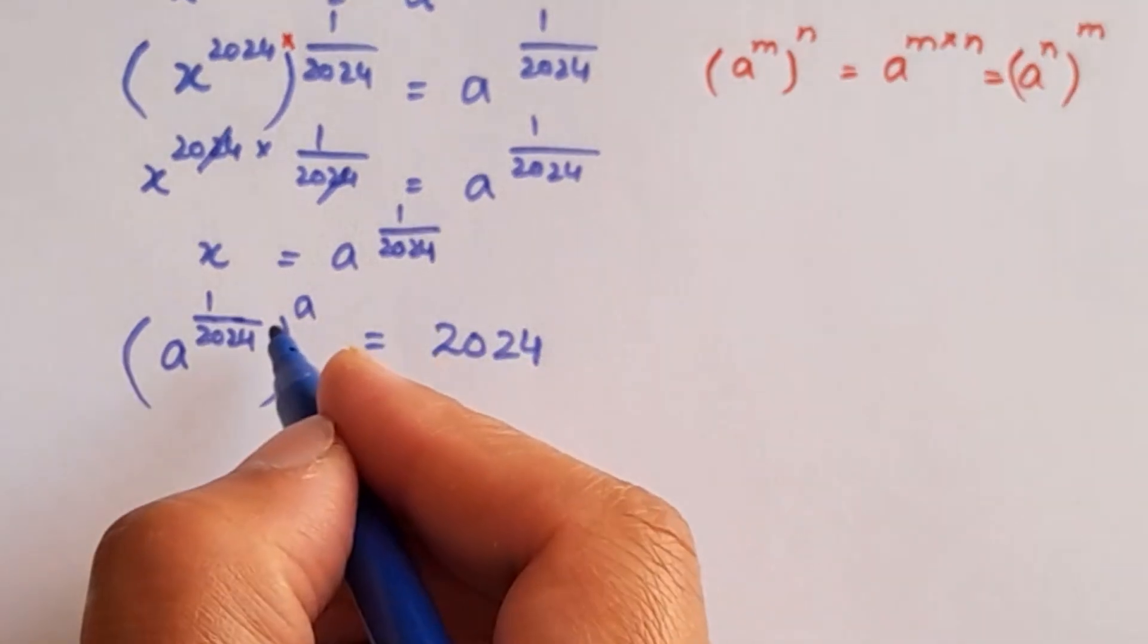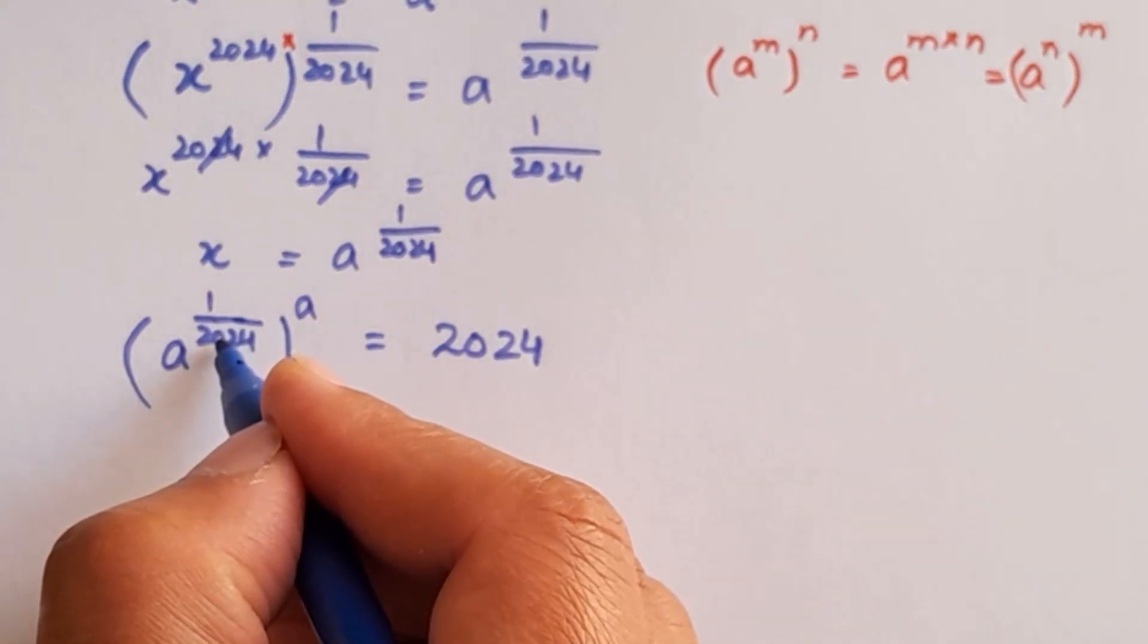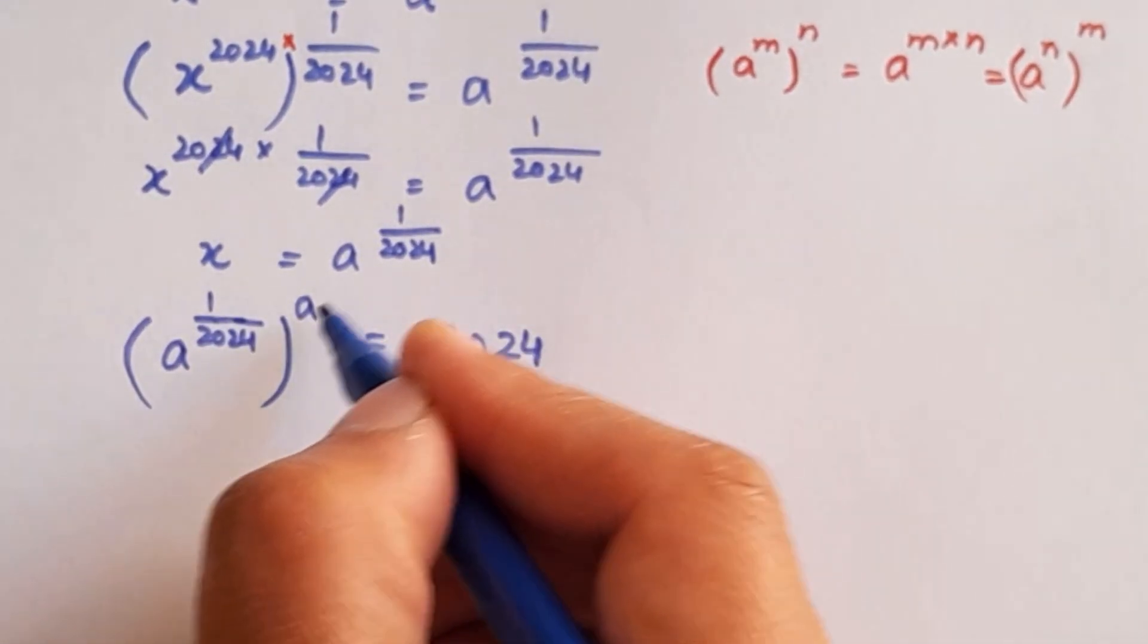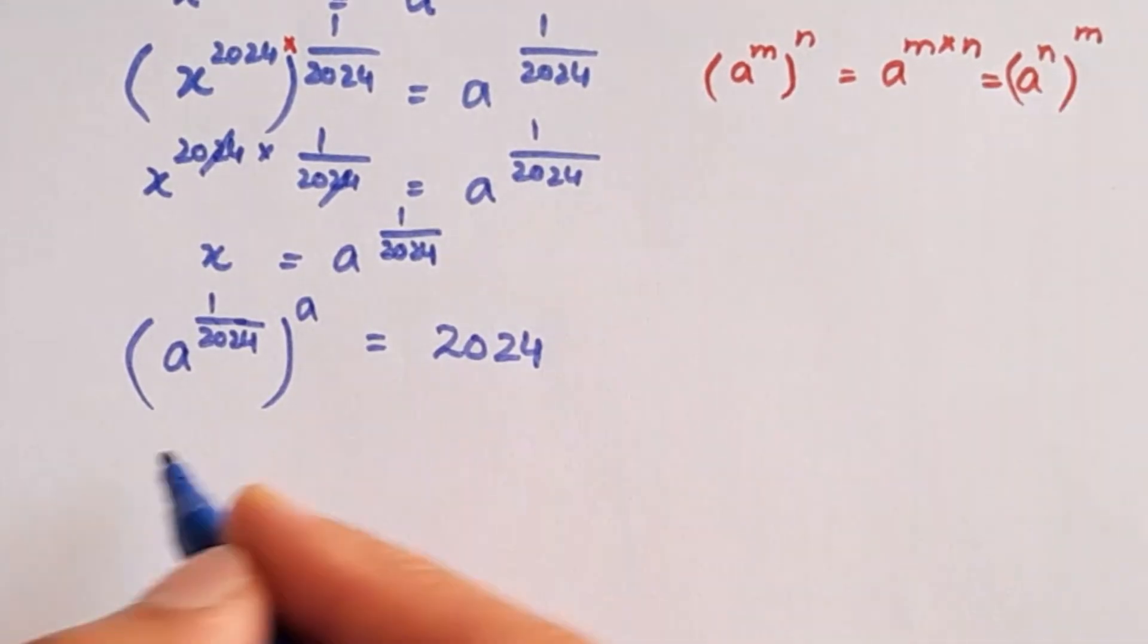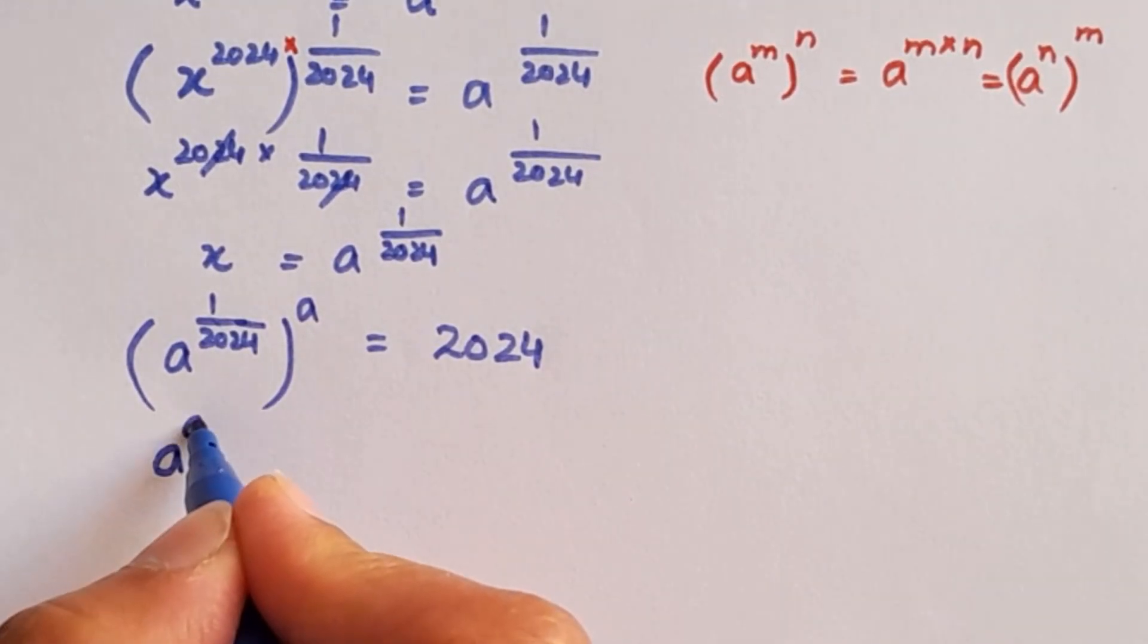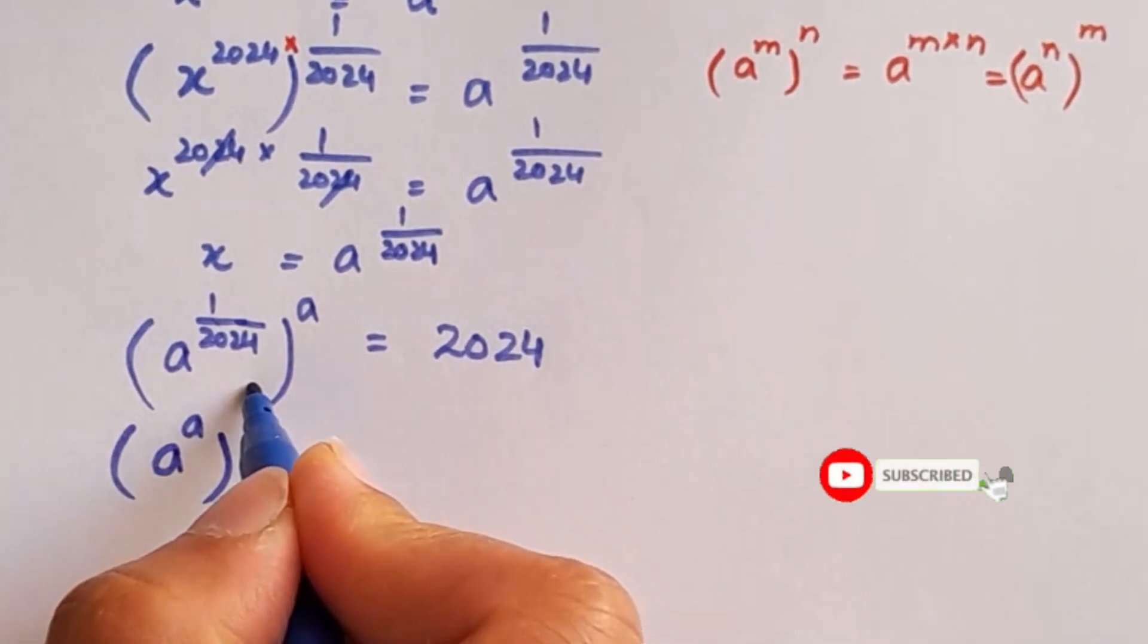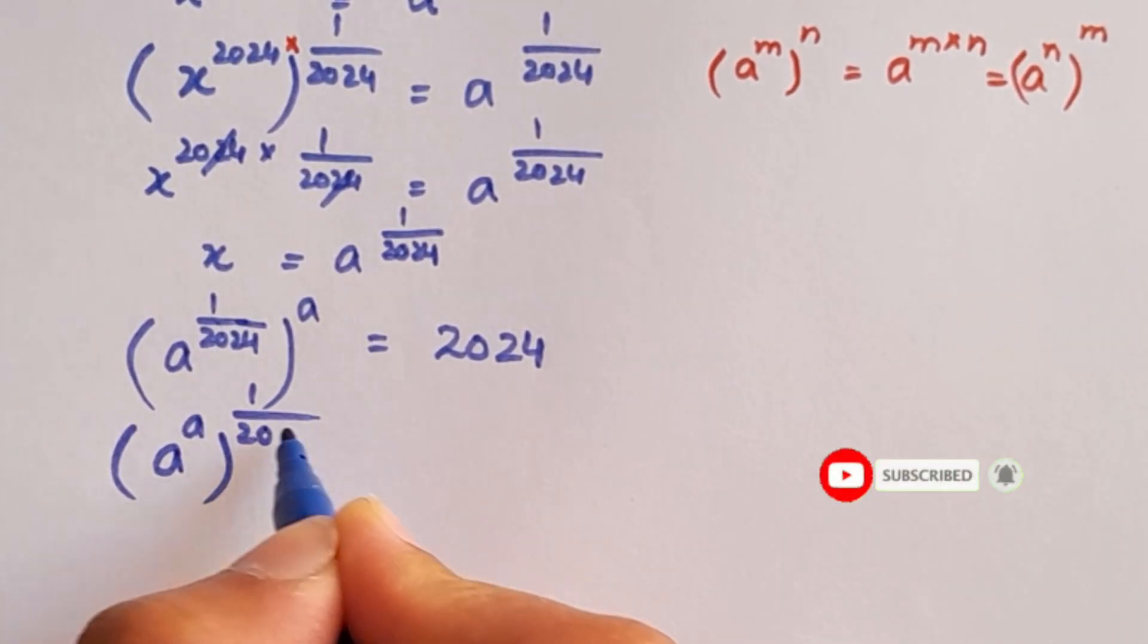In this case, we have 1 divided by 2024 equals m and a equals n. We can write this in this form: a to the power a, whole to the power 1 divided by 2024.